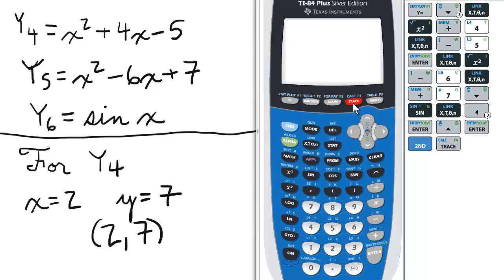Now press the second and trace button for the calculate menu. Calculate one value calculates the coordinate pair for a given x value. We can choose this option just by pressing enter.